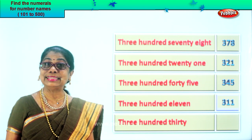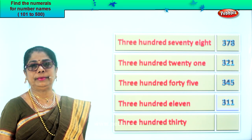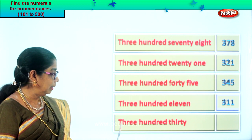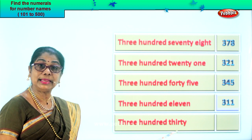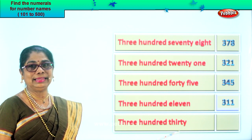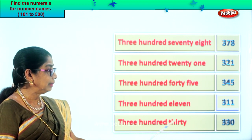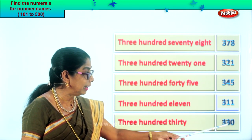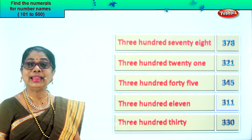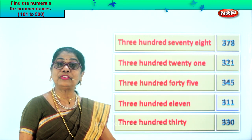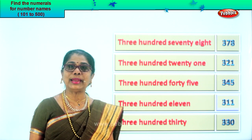Let's take the last number name in this set: three hundred thirty. Three in the hundreds place; next you have thirty — three in the tens place, zero in the ones place. Three hundred thirty. Did you enjoy reading the number name and filling with the correct numeral?